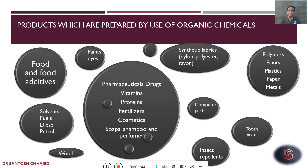Maybe pharmaceutical drugs, vitamins, proteins, fertilizers, different cosmetics what we use like shampoos, soaps, perfumes, etc. — they all are made up of chemicals. Even food what we eat is nothing but chemicals. It is rich in carbohydrates, protein, fats and so on. These are nothing but chemicals.